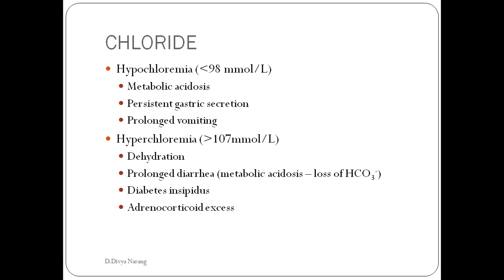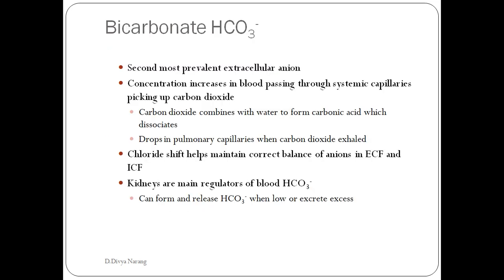Bicarbonate — to be covered in detail in subsequent pH balance and acid-base disorder classes — is the second most prevalent extracellular anion; normal value is 22 to 30 mmol/L. In health, at normal plasma bicarbonate concentration, virtually all filtered bicarbonate is absorbed by the kidneys. The kidneys are the main regulators of blood bicarbonate — they can form and release bicarbonate when levels are low or excrete it when in excess.